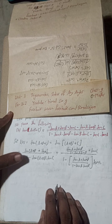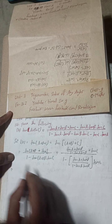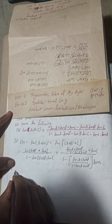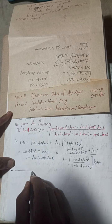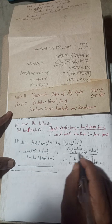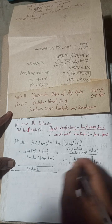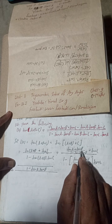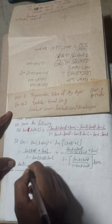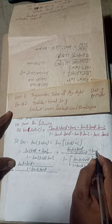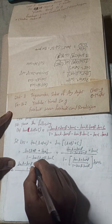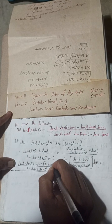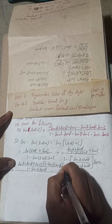Taking LCM in the numerator, which is (1 − tan a · tan b), we get: numerator = tan a + tan b + tan c · (1 − tan a · tan b), which expands to tan a + tan b + tan c − tan a · tan b · tan c.